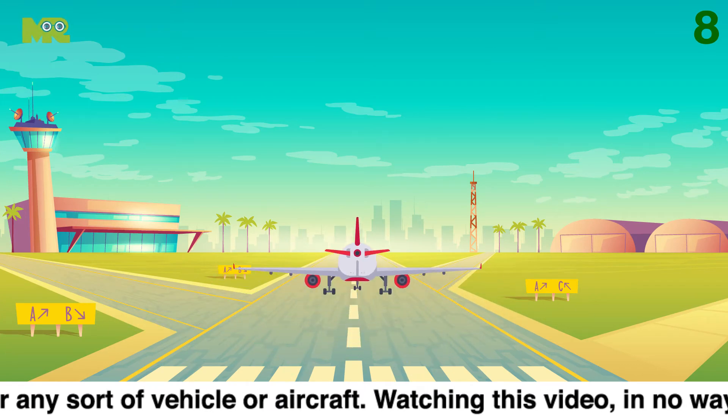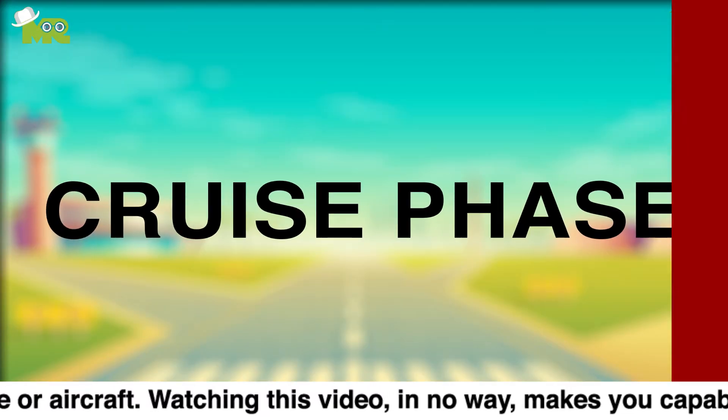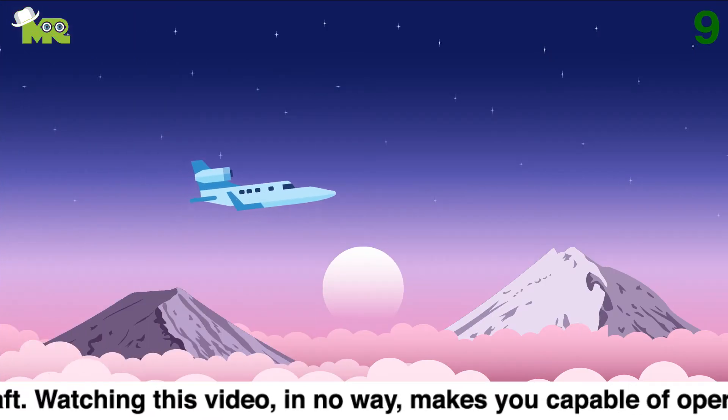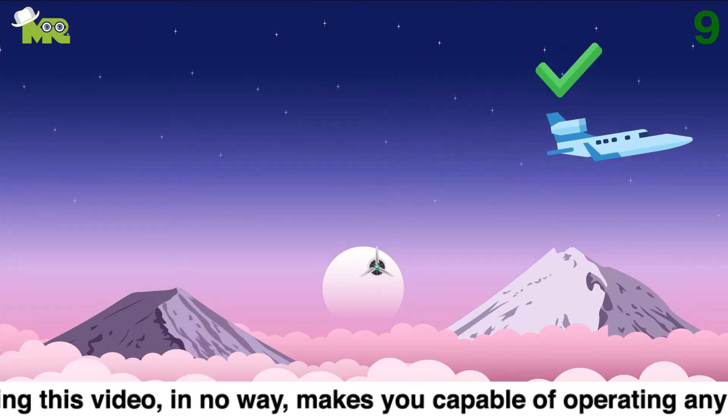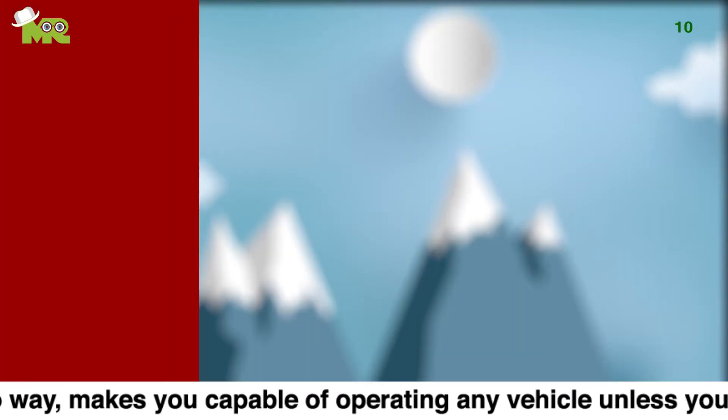Eight, the phase between the takeoff and landing is known as the cruise phase of your flight. Nine, once you have your desired altitude, you should set the engine power to 75%. Ten,